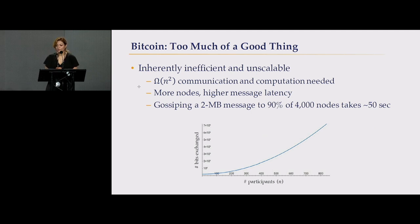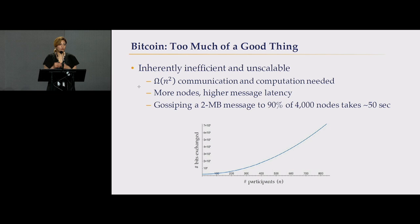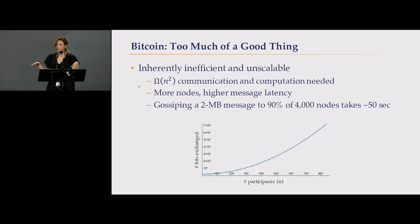Why are they too much of a good thing? In Bitcoin, you have 4,000 nodes and all nodes are replicas of each other. If you want to gossip a 2-megabyte block in Bitcoin, it usually took 50 seconds. Inherently, Bitcoin and traditional blockchains with full replication do not scale well in terms of communication and computation. For each message, it must touch all nodes in the network, so you cannot do better than O(N²) communication cost — it's inherently impossible. If you add more nodes, you add more latency.